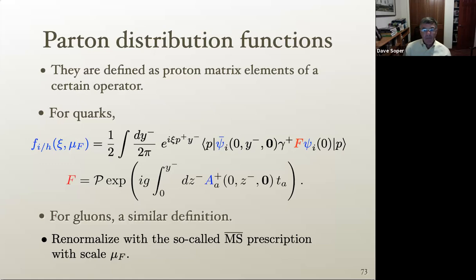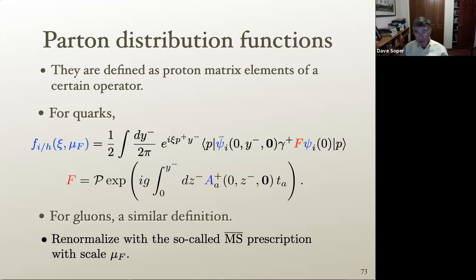Let me now talk about what a parton distribution function actually is — you need a proper definition. The definition is in quantum field theory with QCD: they are matrix elements in a proton state of a certain operator. I start with a proton state; if I wrote the spin there would be an S, and I sum over S. It's the expectation value in that proton state of an operator. The operator ψ_i is a quark field operator — specifically for finding a quark of kind i, say an up quark — measured at position zero, with a Dirac matrix γ⁺.